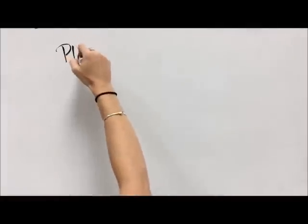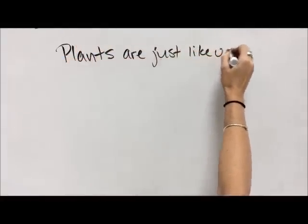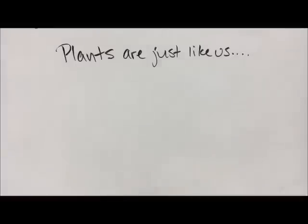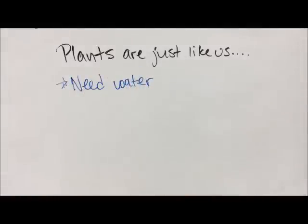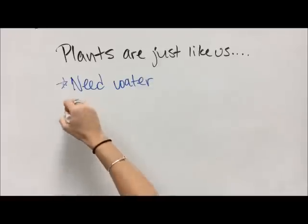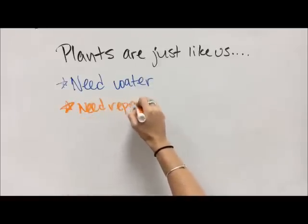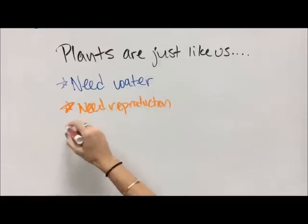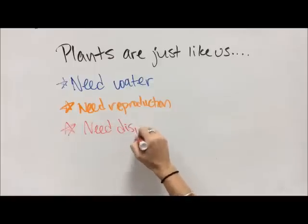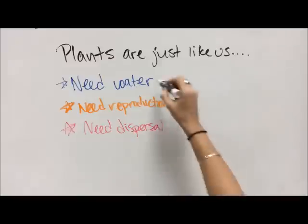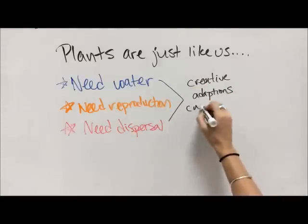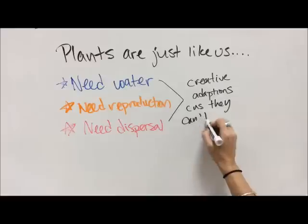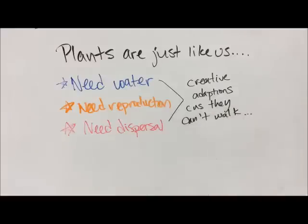So many clever ways that plants get their stuff moved around. You can see plants are just like us — they need water just like we do, they need to reproduce so they can make more of themselves and aren't the last ones of their population, and they need to disperse and spread out the same way that we humans do. But because they don't have legs, they've had to get creative with the way that they meet these needs.